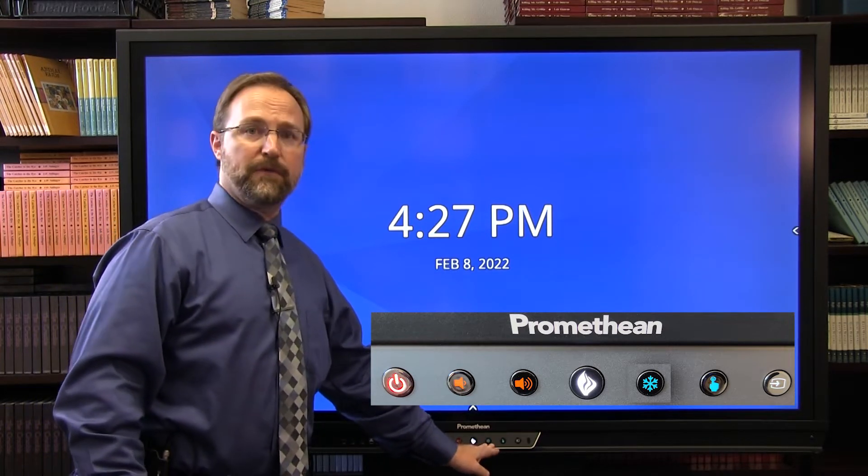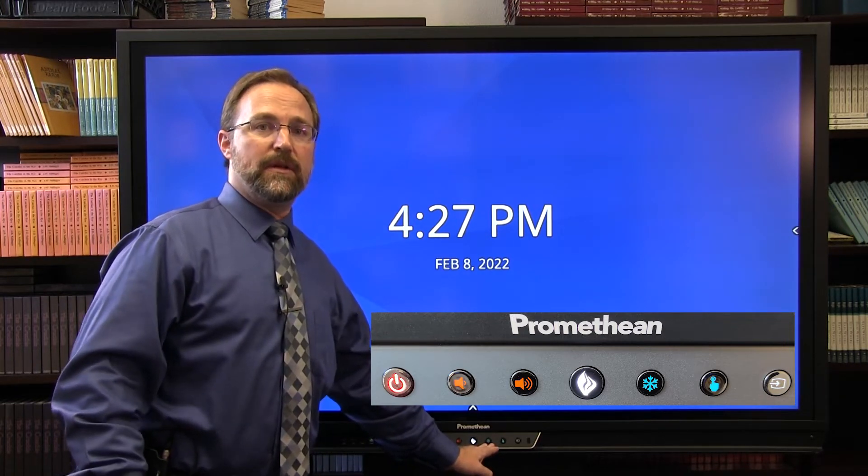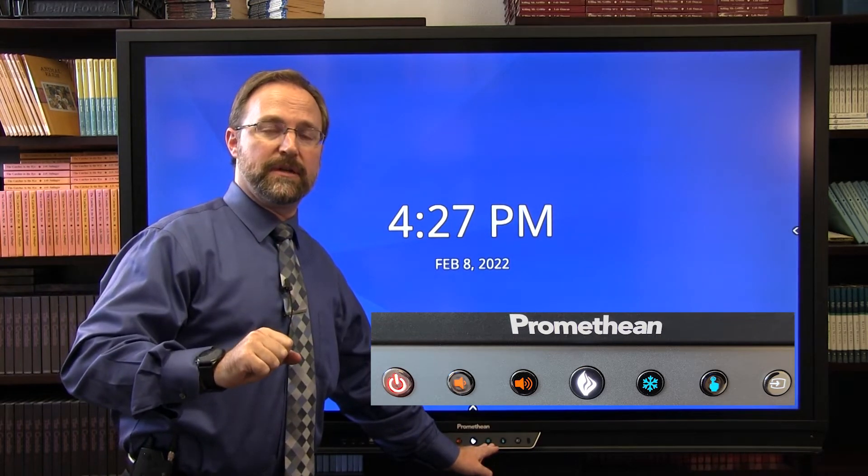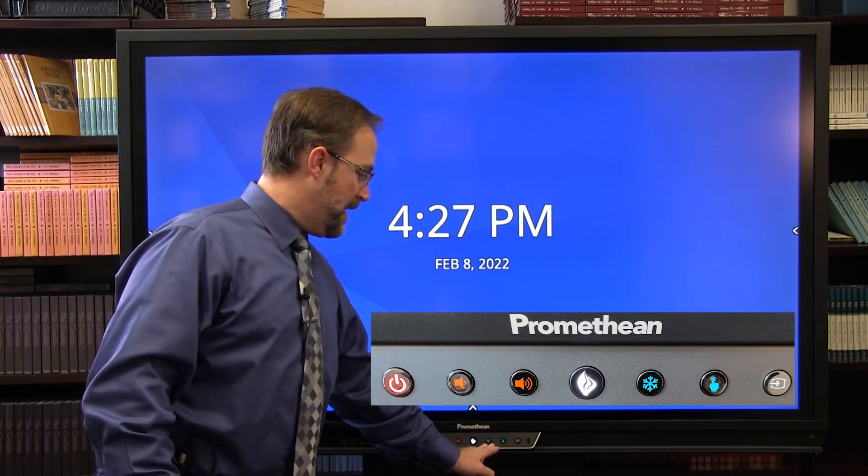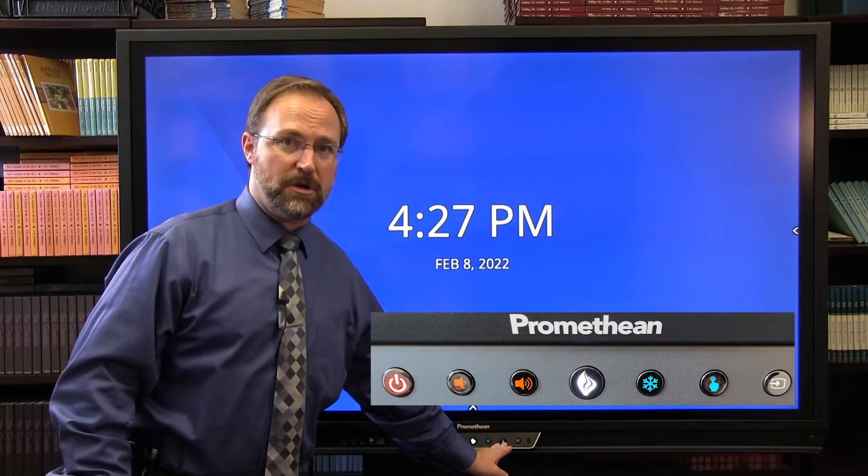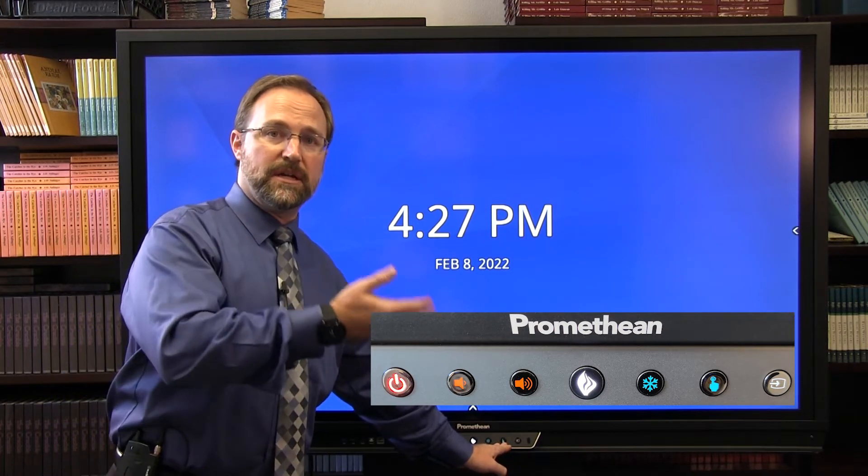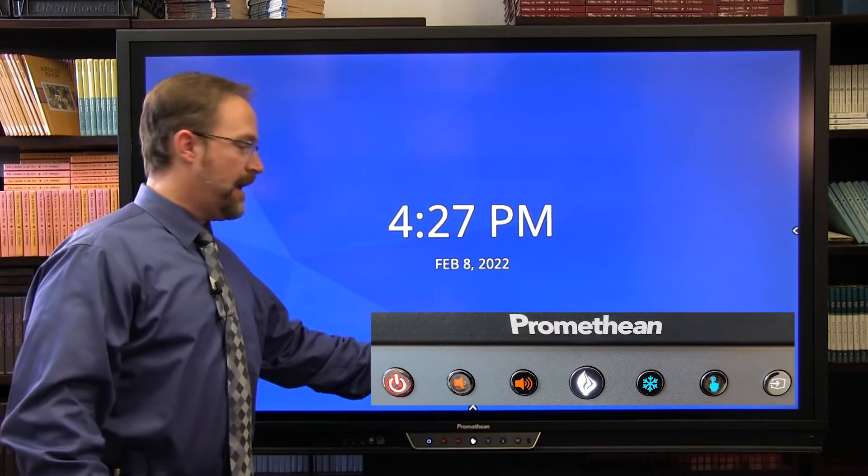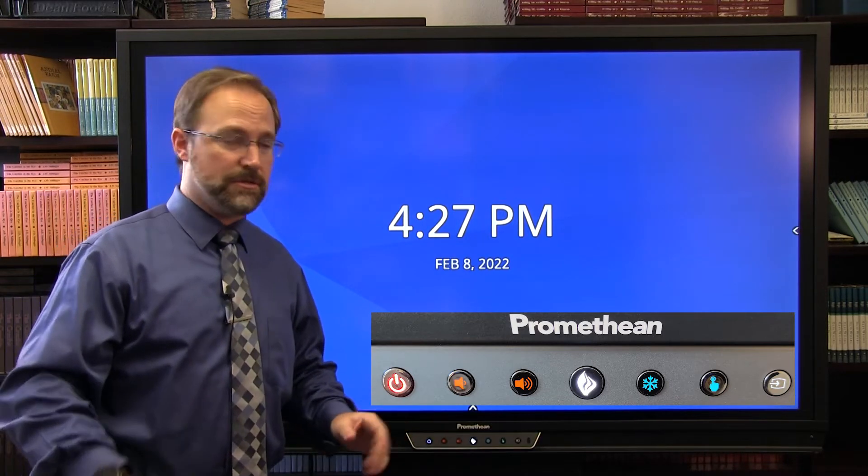Next to that is the freeze button which many of you are used to with your projectors, where whatever is on the board you can freeze and then it just stays on the board and you can continue doing other various things on your laptop without it being seen on the screen. And then the far right one is your touch on or touch off. So there are some times that you may not want to accidentally touch something on the screen. You can press this button and there will be an icon that shows up that demonstrates that the no touch is on.